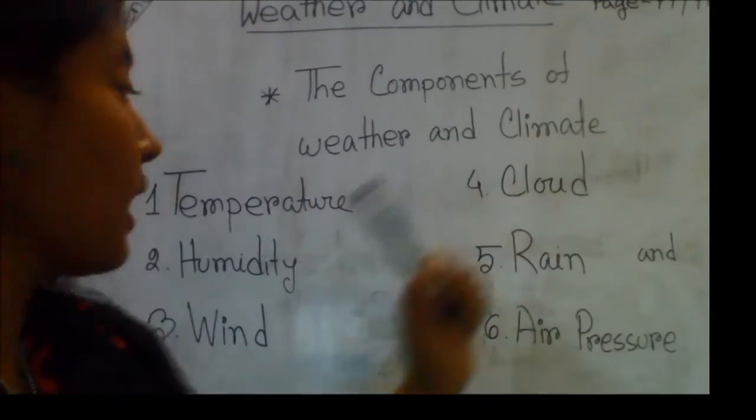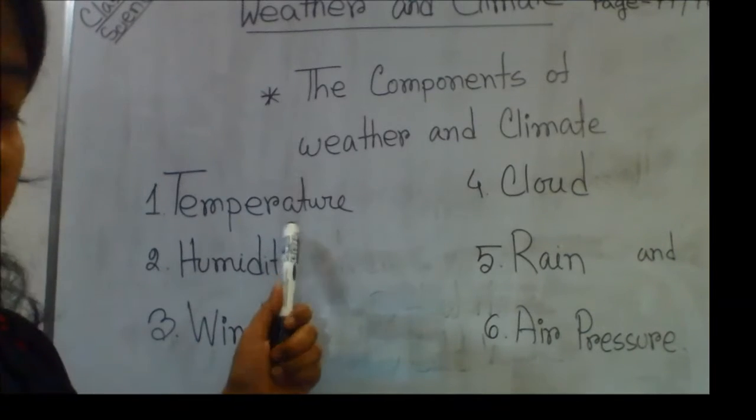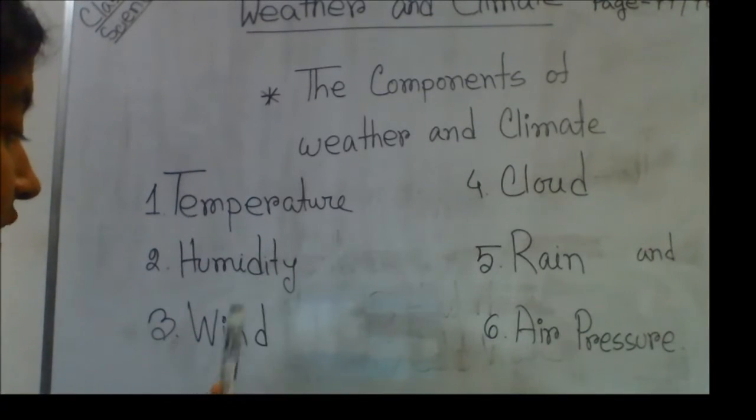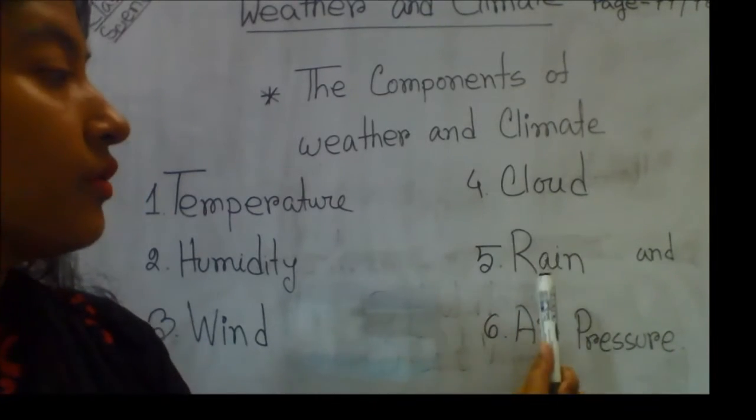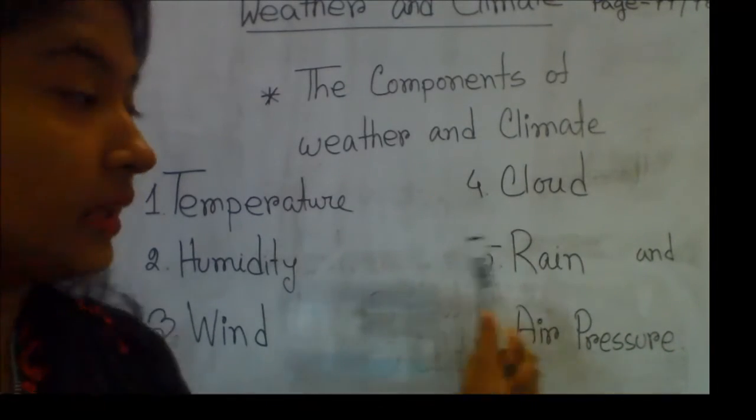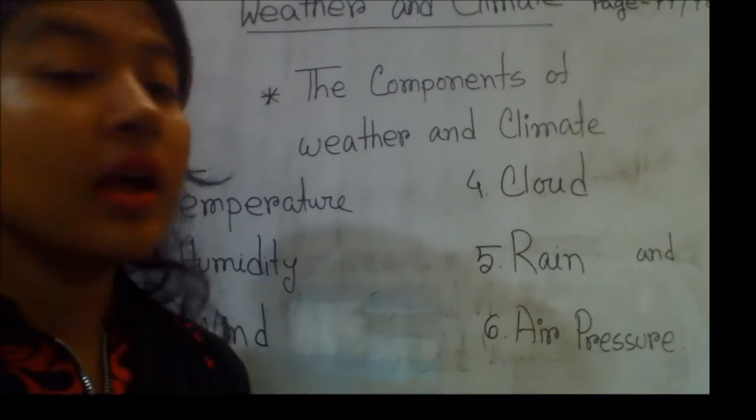Number one: temperature. Two: humidity. Three: wind. Four: cloud. Five: rain. And last of all: air pressure. So these are the six components of weather and climate.